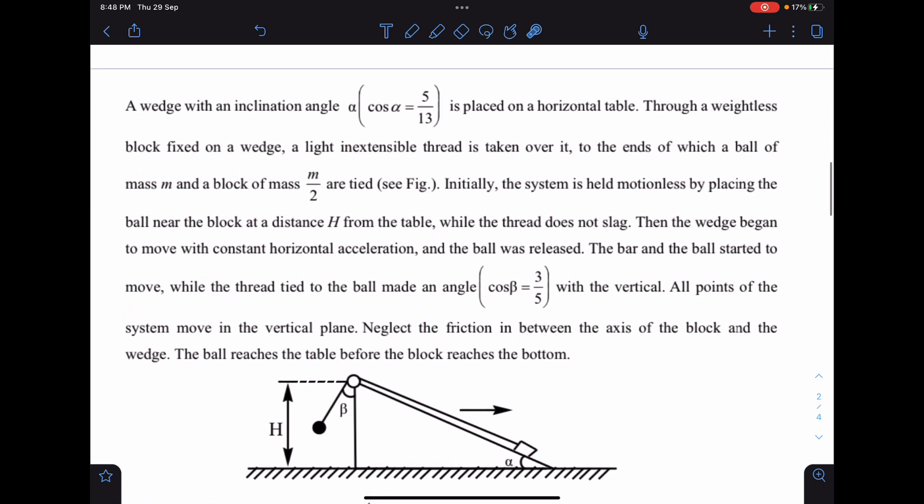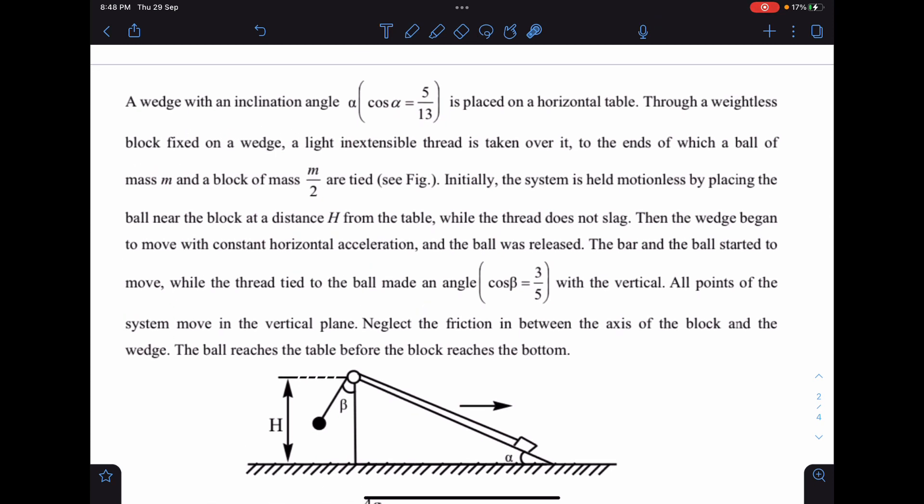Here is the problem statement: a wedge with inclination angle alpha is placed on the horizontal table through a weightless block fixed on the wedge. A light and extensible thread is taken over it to the ends of which ball of mass m and a block of mass m by 2 are tied.